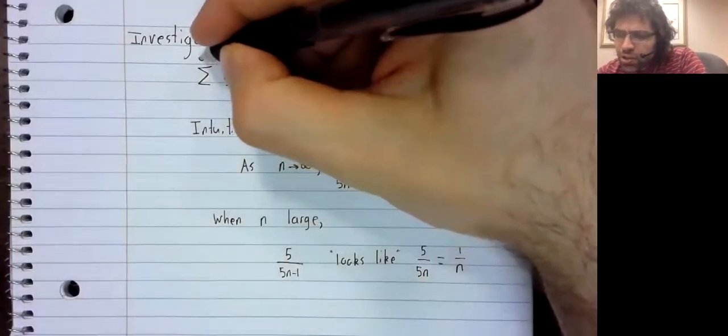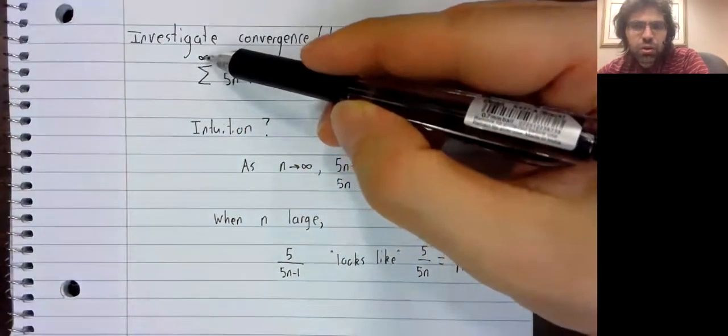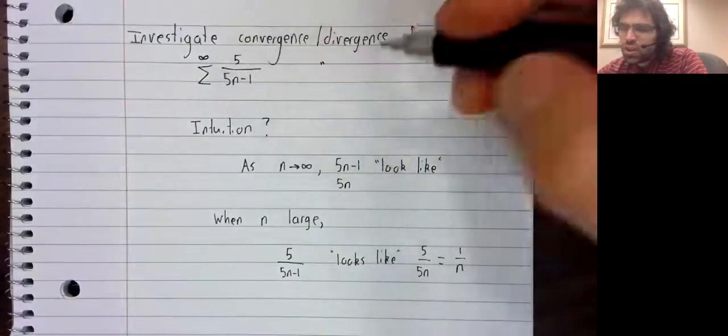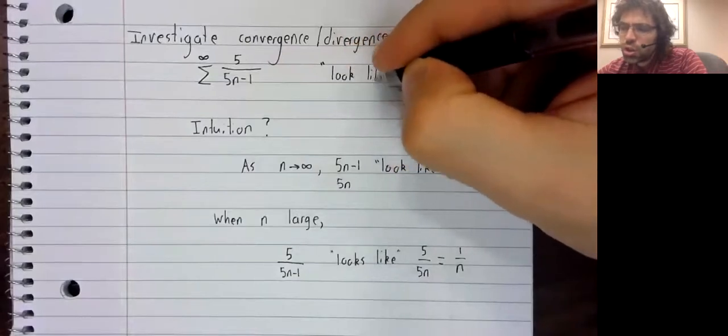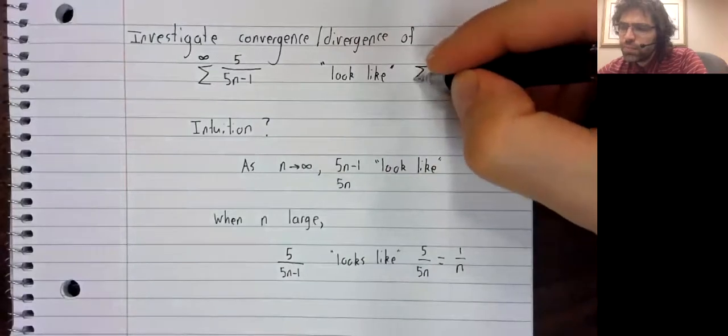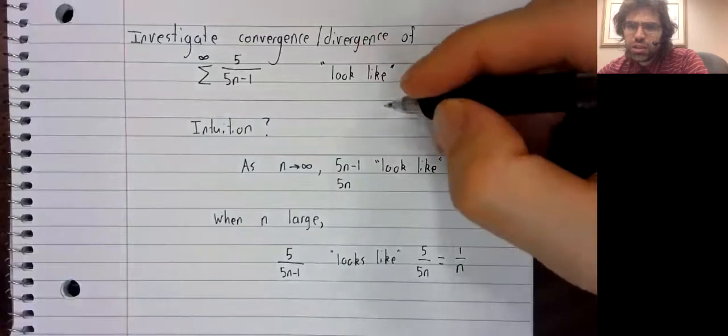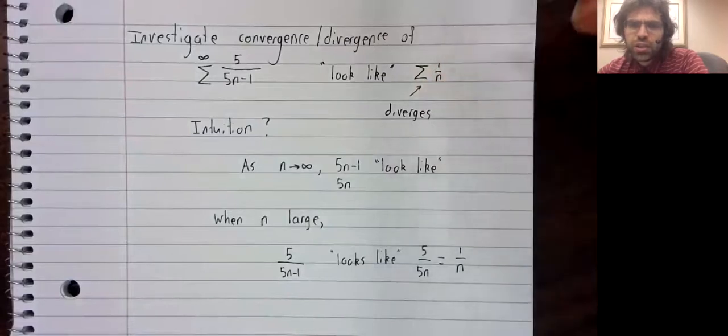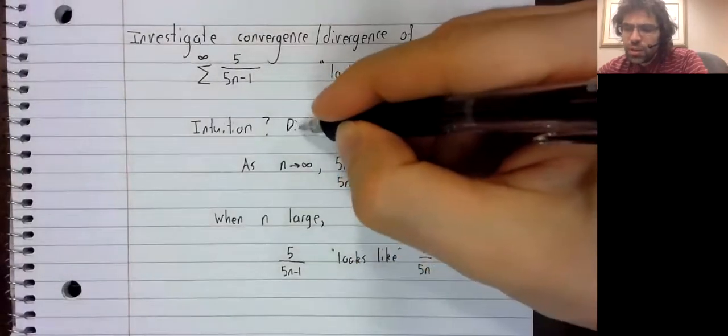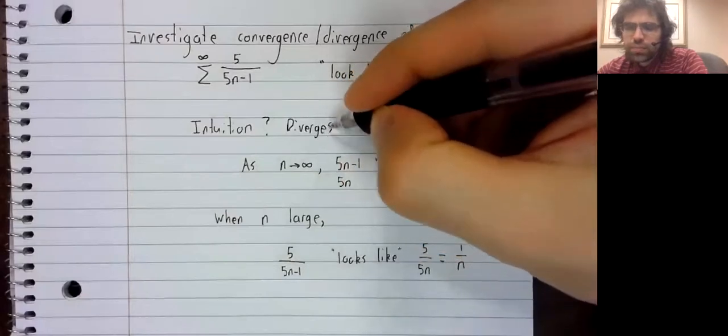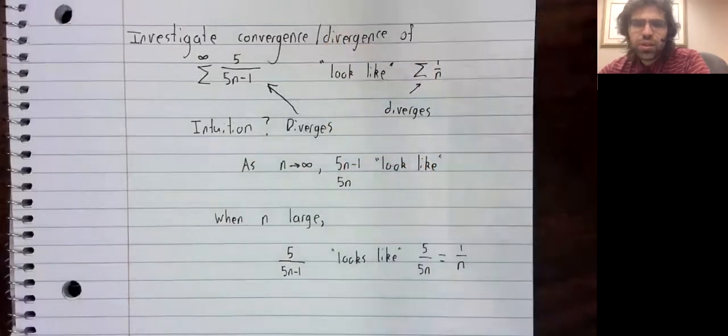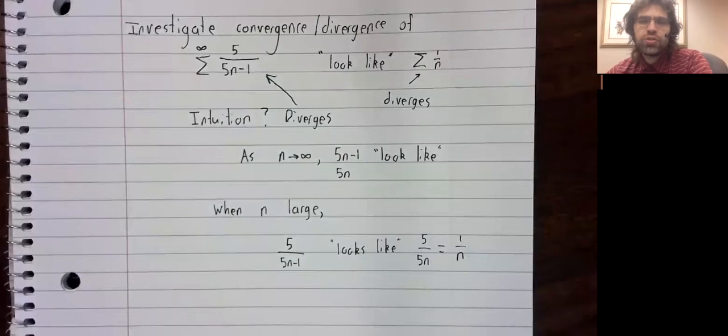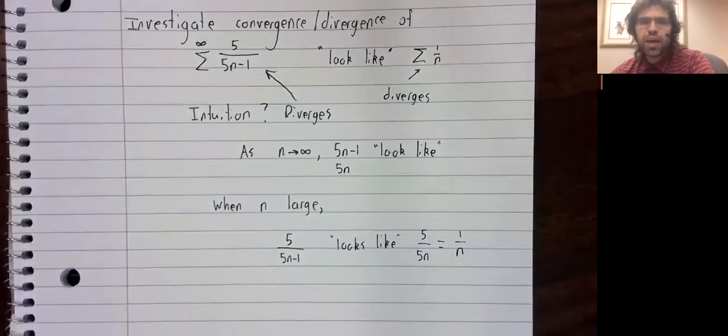So when n is large, and of course n is getting large, it's going to infinity here, if n is large, this series should start to look like the harmonic series, and the harmonic series diverges. So based on that, I'm going to guess that this series also diverges. And now I'm going to try to use the comparison test to formalize my intuition.